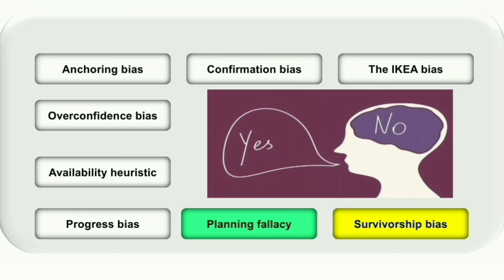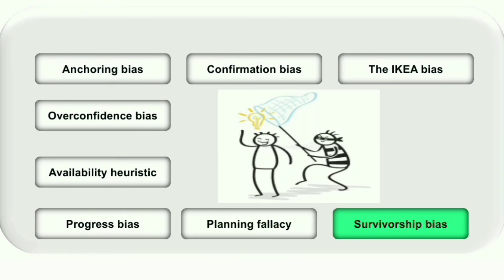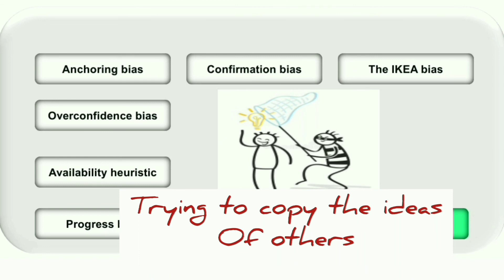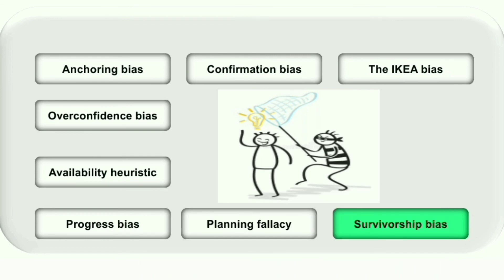The next bias is survivorship bias. It is defined as becoming overly optimistic about a decision because we only look at those who succeeded using a certain method, without analyzing the time and study they invested. We simply assume that if we emulate the same actions we will achieve the same success. For example, when starting a business, we look only at those who prospered without considering the time and circumstances involved, and we may succeed — or we may miserably fail.